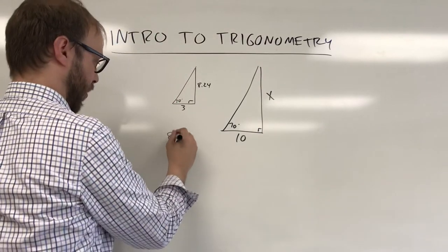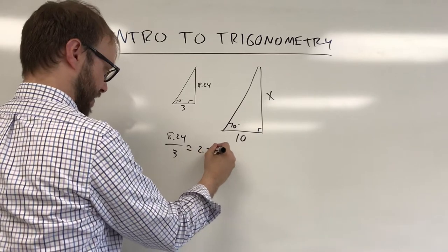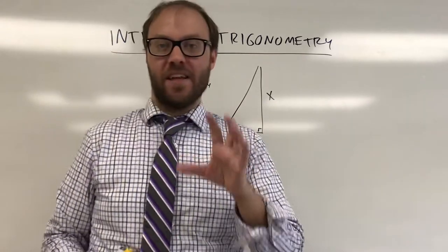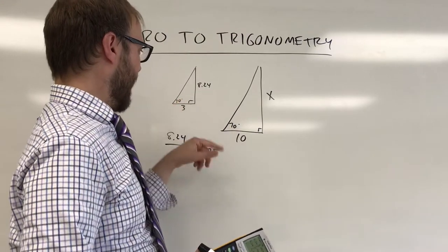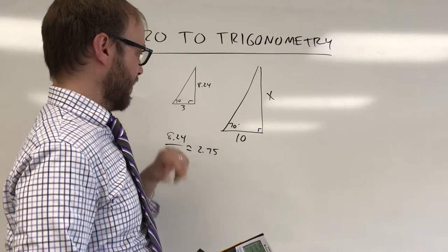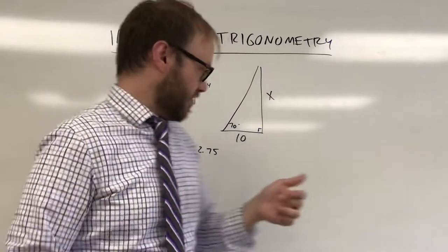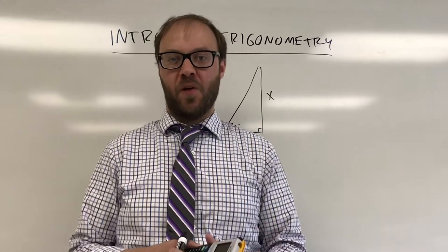So I took 8.24 and I divided by 3, and that's about 2.75. So what that's telling me is if I have a right triangle with a 70 degree angle, the height should be about 2.75 times as tall as the base. And so we could use that idea here as well. We could multiply this by 2.75, and that would tell me the height.